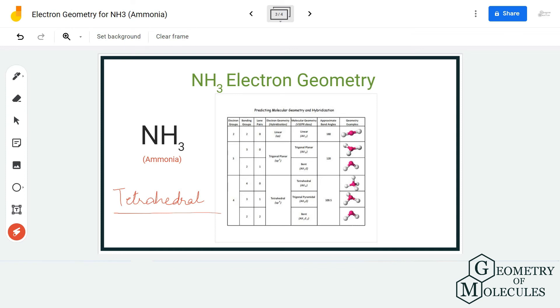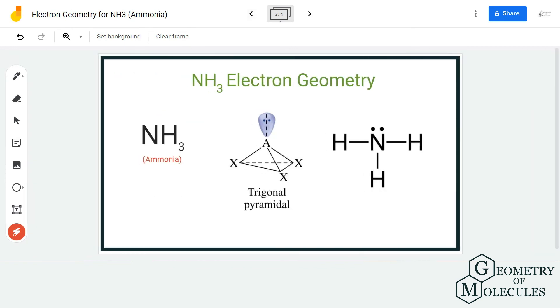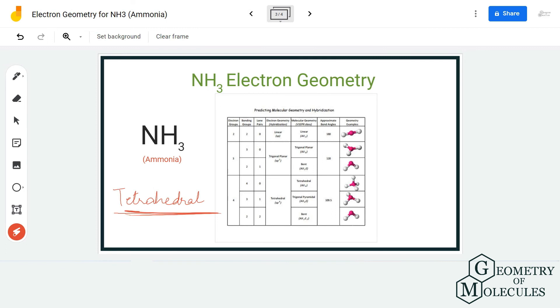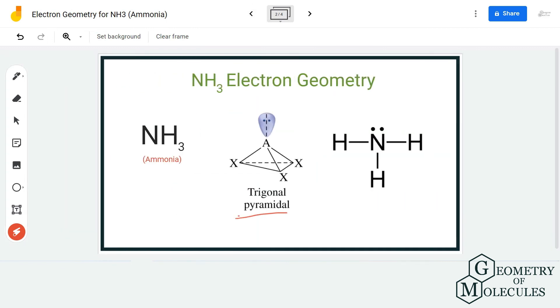There's a recap for this: ammonia has a tetrahedral electron geometry and trigonal pyramidal molecular geometry. I hope this video helps you to understand that.